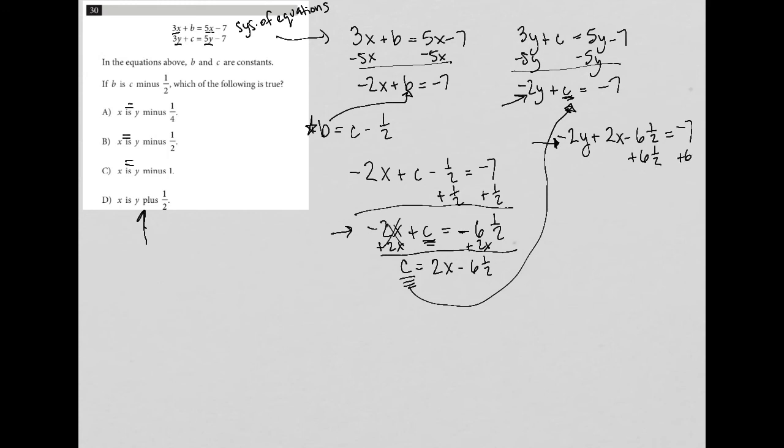I'm going to add 6 and a half to both sides to get started. So I'd have negative 2y plus 2x equals negative 7 plus 6 and a half, which is negative 1 half. And then I'm going to add 2y to both sides. So that gets rid of the 2y on this side. So I have 2x equals 2y minus 1 half.